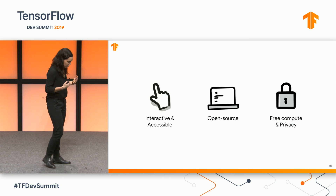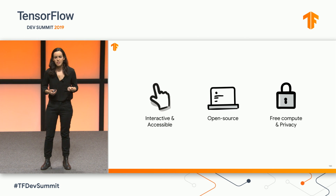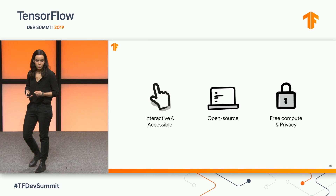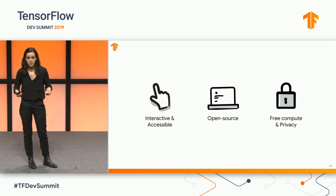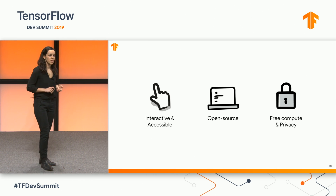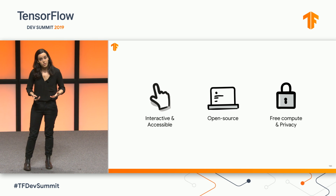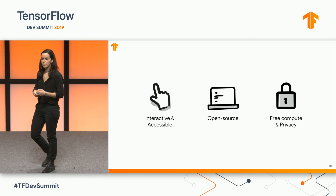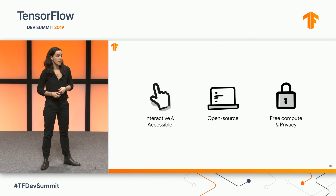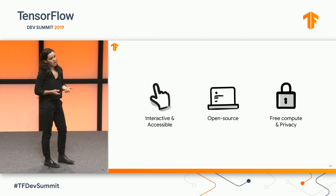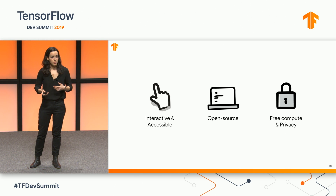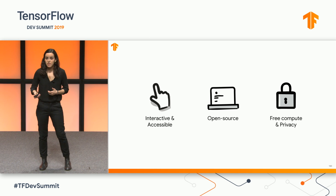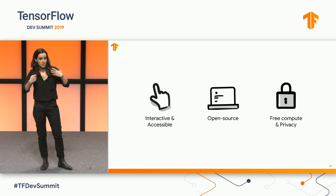Stepping back for a second — if we think about what made these projects successful or at least useful for other people, we can see they were all interactive and accessible through the browser, which really lowered the barrier of entry. They all had an open source component so people could look under the hood, see what's happening, modify and play with them. And finally, they're all free because the processing is happening locally in the browser with TensorFlow.js, and that gave us privacy so we didn't have to send images of people's bodies and faces to any servers.